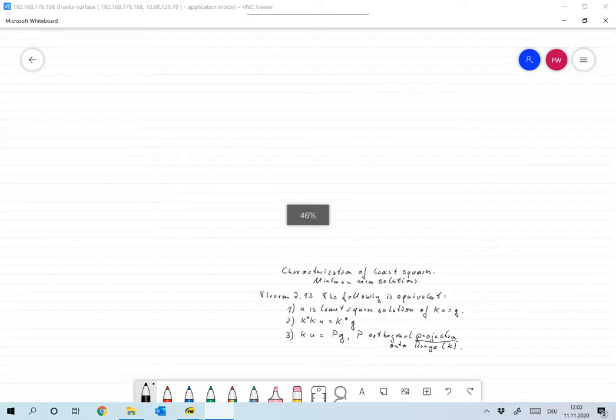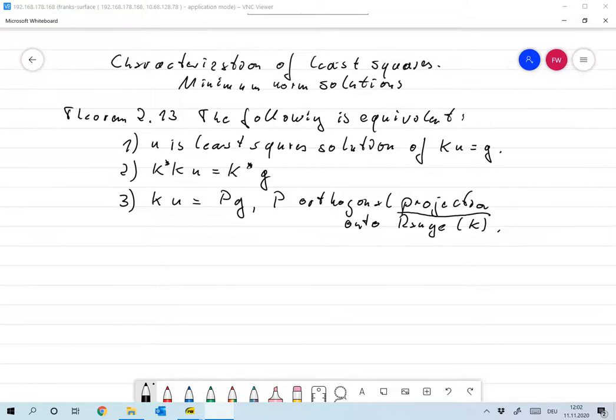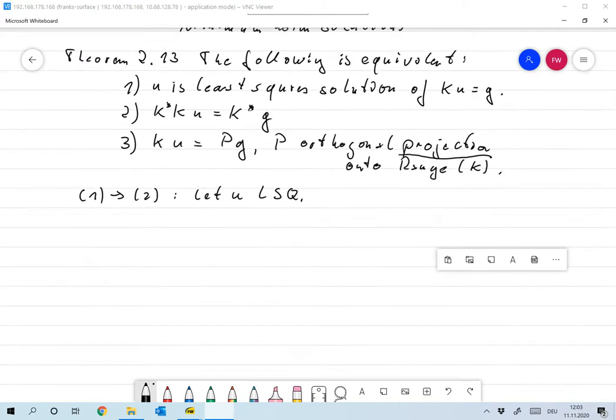Let's prove this in the usual way. We go from one to two, and actually more or less you already saw that in the last lecture. So, let u be a least square solution, and I will always abbreviate that with LSQ.